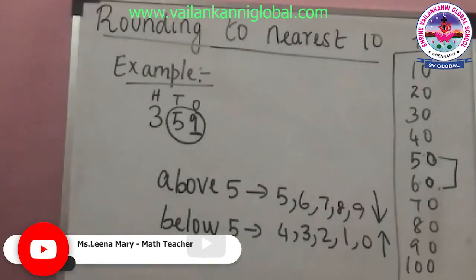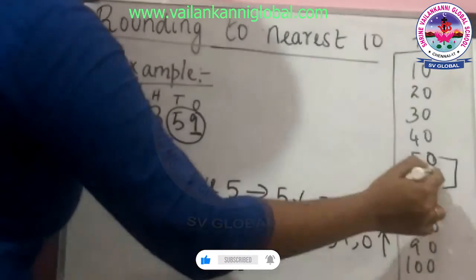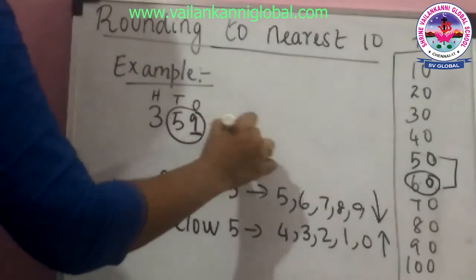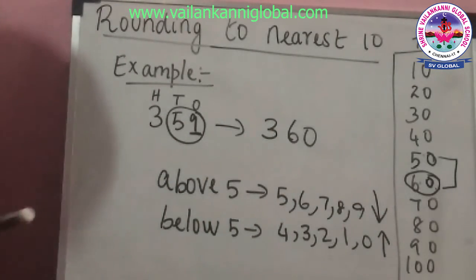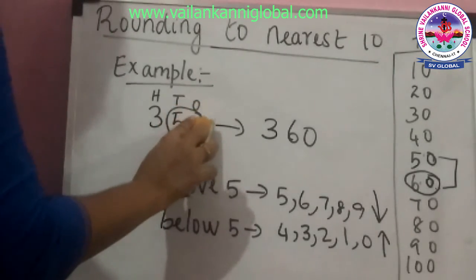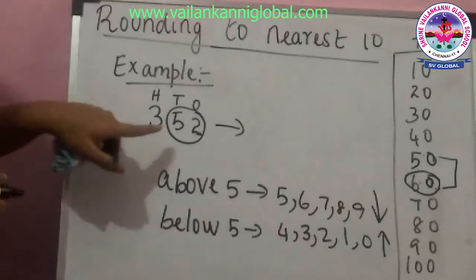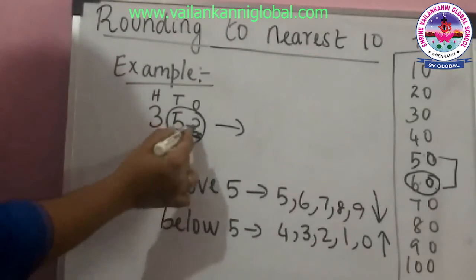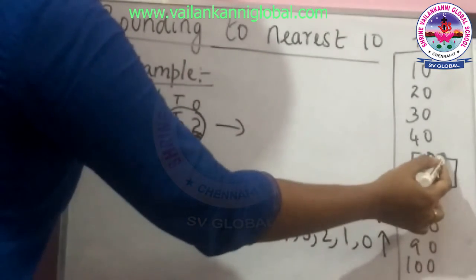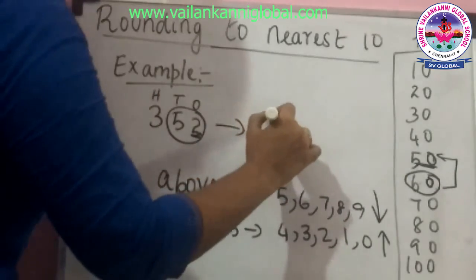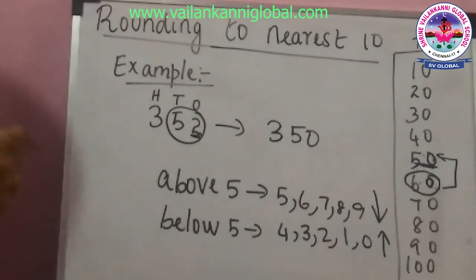So what do 'up' and 'down' mean? The number 9 is above 5, so you round down — meaning you choose the number which is down. The number which is down is 60, so 359 can be rounded to 360. For another example, if the number was 352, the last digit is 2, which is below 5, so you round it up — the number on top is 50, so 352 can be rounded to 350.